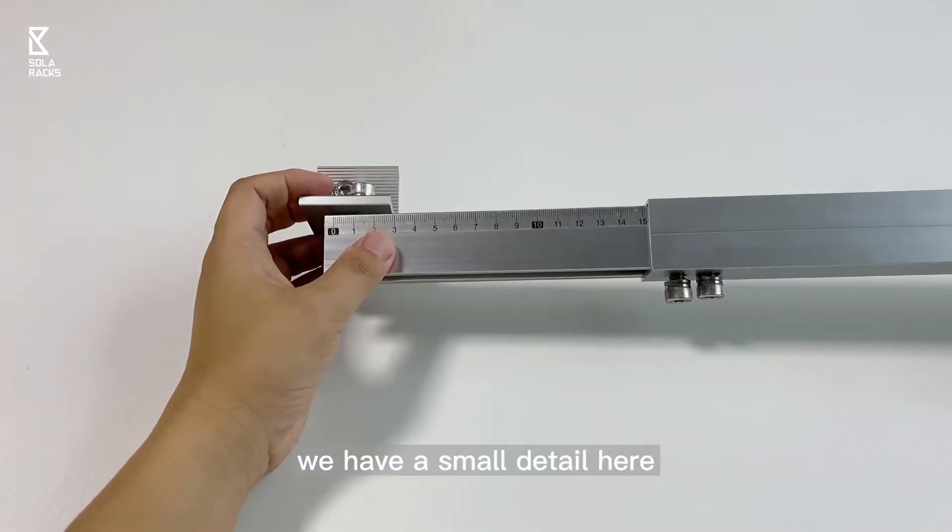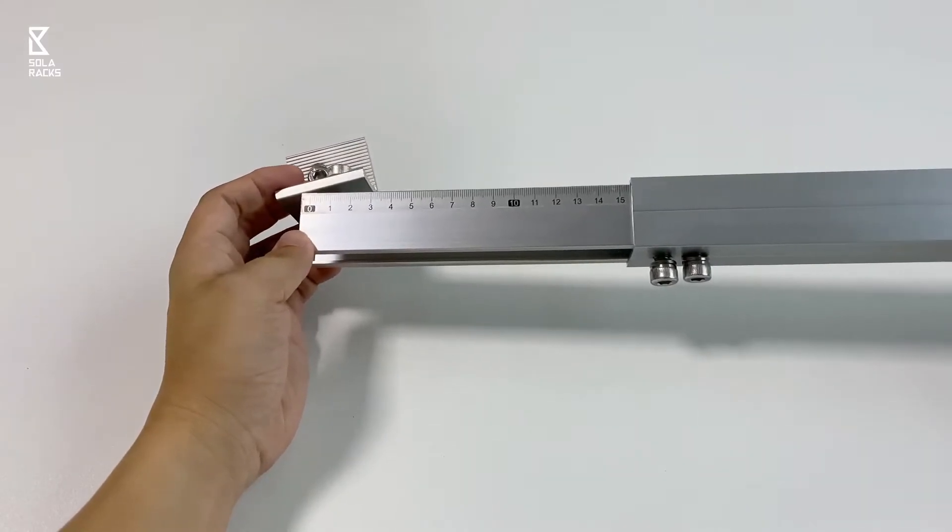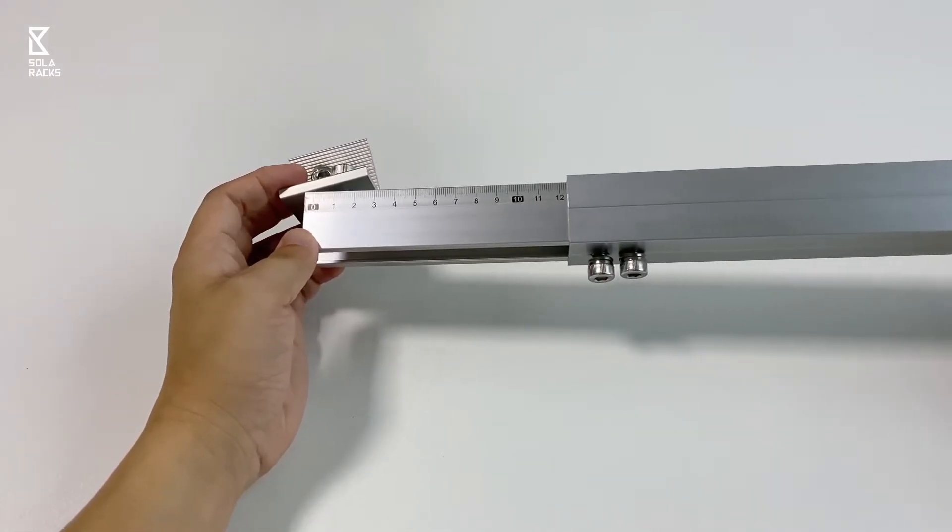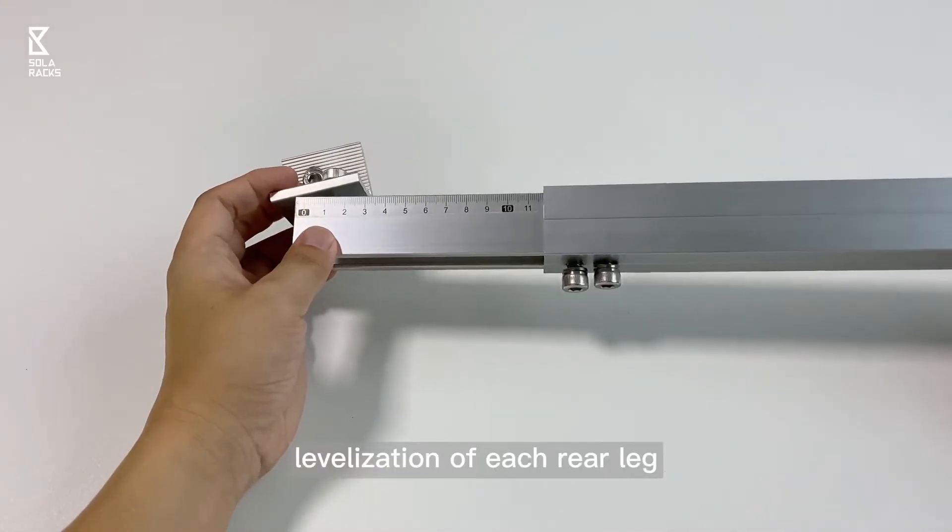We have a small detail here - we glued a scale tape on the telescopic part so that customer installers can easily adjust the levelization of each rail leg.